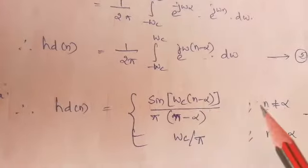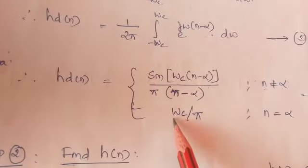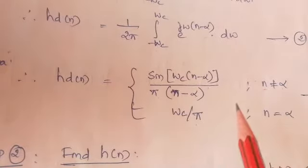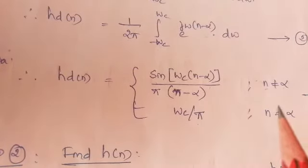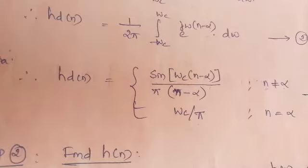For this condition, this answer we are getting. If n equal to α, ωc by π we are getting. First we have to take for the given transfer function the inverse Fourier transform, then take the power term common, finally express the hd(n) in this format.